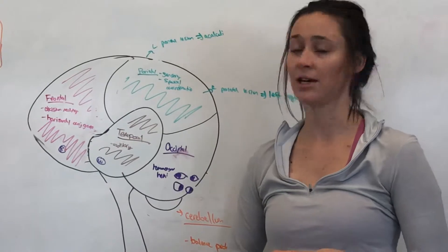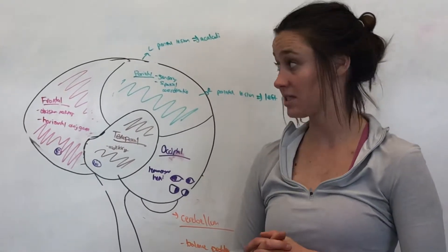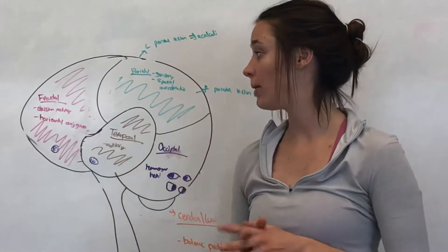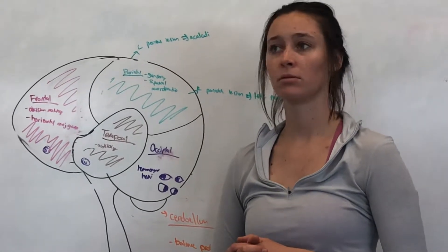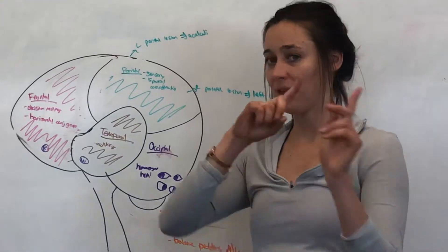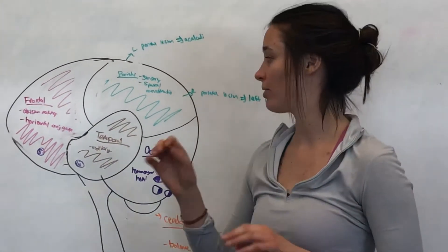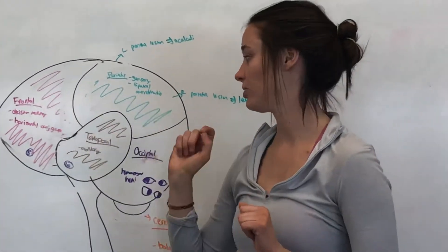And then also you'll get something called horizontal conjugate gaze. So that's in the frontal lobe, and basically that's where you turn your head, and then your eyes follow. So you make a motor movement, and then the eyes just take a minute to catch up. So if you hear that in a vignette, think frontal lobe.